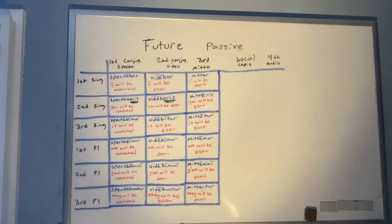Third conjugation future passive with MITTO: MITTAR (I will be sent — active would be MITTAM, replace M with R), MITTERIS (you will be sent — with macron on E for future), MITTETUR (it will be sent), MITTEMUR (we will be sent), MITTEMINI (y'all will be sent), MITTENTUR (they will be sent).